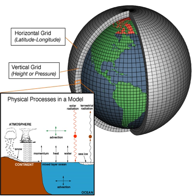The acronym GCM originally stood for General Circulation Model. Recently, a second meaning came into use: global climate model. While these do not refer to the same thing, general circulation models are typically the tools used for modeling climate, and hence the two terms are sometimes used interchangeably. However, the term 'global climate model' is ambiguous and may refer to an integrated framework incorporating multiple components including a general circulation model, or to the general class of climate models that use a variety of means to represent the climate mathematically.